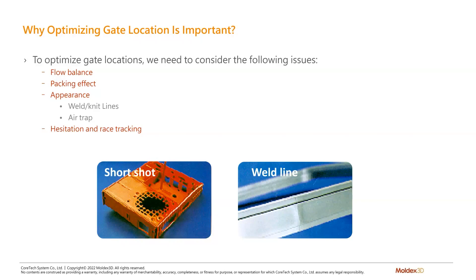In terms of revisions, process conditions offer the least efficiency — approximately five to ten percent improvement in quality. So you may need to look at the higher-impact factors that affect injection molding, with mold design being one of the most significant.